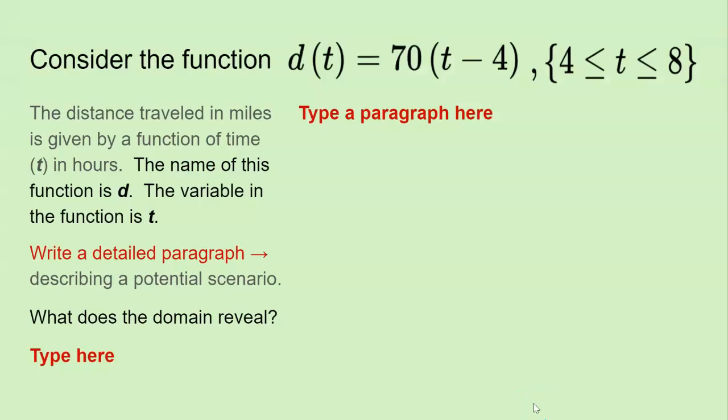Our first activity is in slides and students are given a function d(t). They're given a description about what this function represents. The d is the distance in miles and the t is the time in hours, and then they're asked to write a paragraph explaining what might be going on in this scenario. They should pay attention to the t minus 4, the 70, the 4, and the 8.